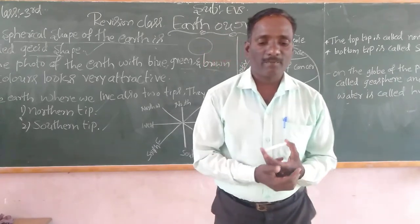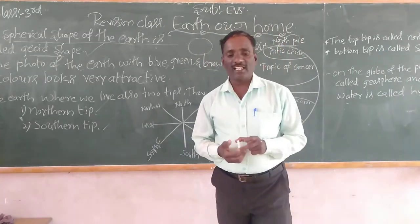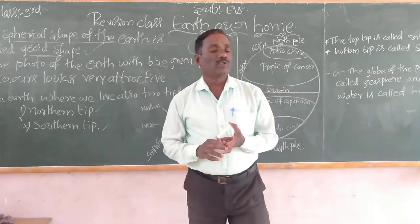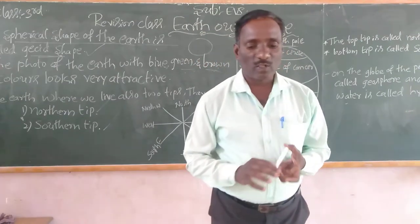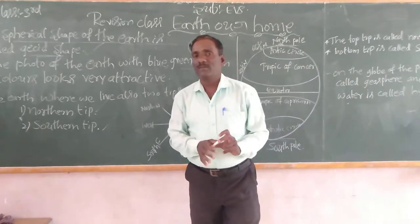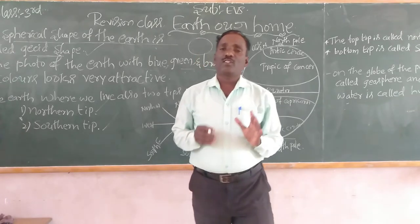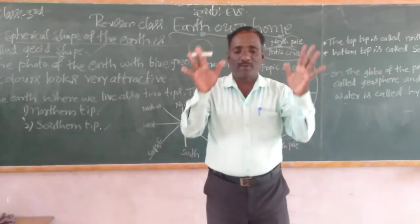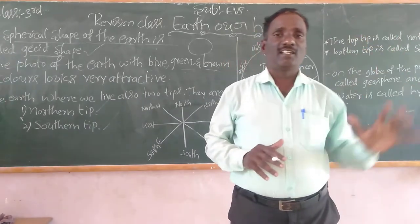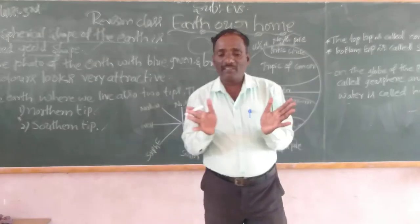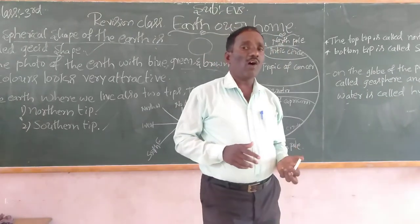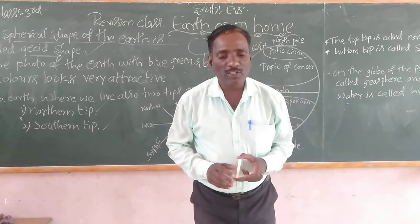By using the globe, we can know about the earth. The globe shows the shape, length, and breadth of the earth very accurately. Think and make a list of the uses of the globe. The globe shows the shape of the earth — that is the first use. The globe gives information about the shape, length, and breadth of the earth very accurately.